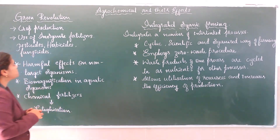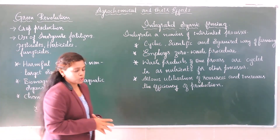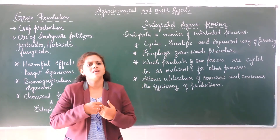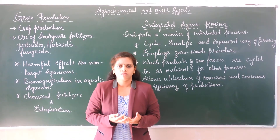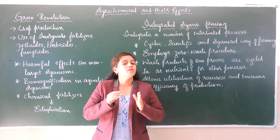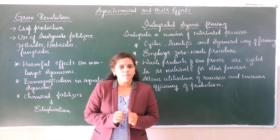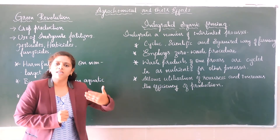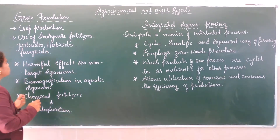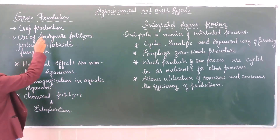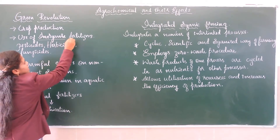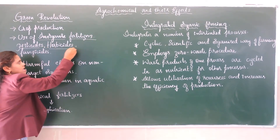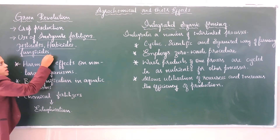During the green revolution, there was an increase in crop production. As there was an increase in crop production, there was also an increase in the use of inorganic fertilizers, pesticides, herbicides, and fungicides.